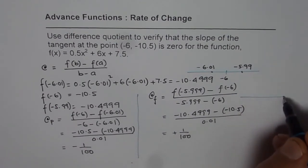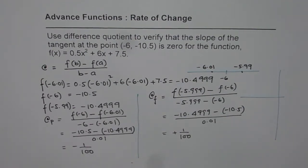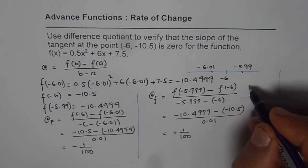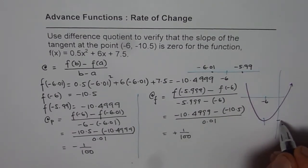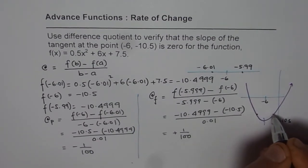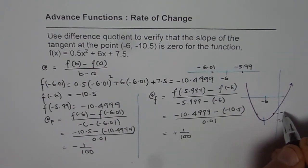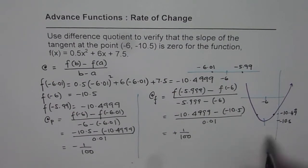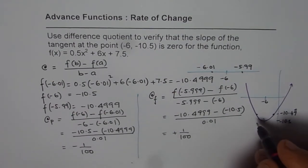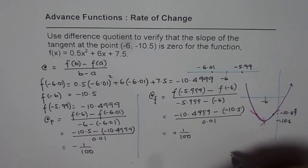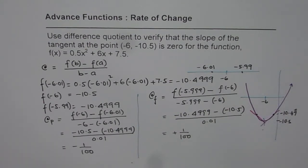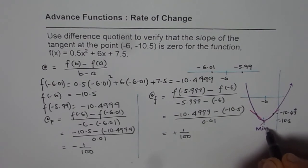If we sketch this parabola, at x = -6 we have the value -10.5, and at both the preceding and following points we have -10.4999. The preceding rate of change is negative, and the following rate of change is positive — it changes from negative to positive — which means we are expecting a minimum at this point.